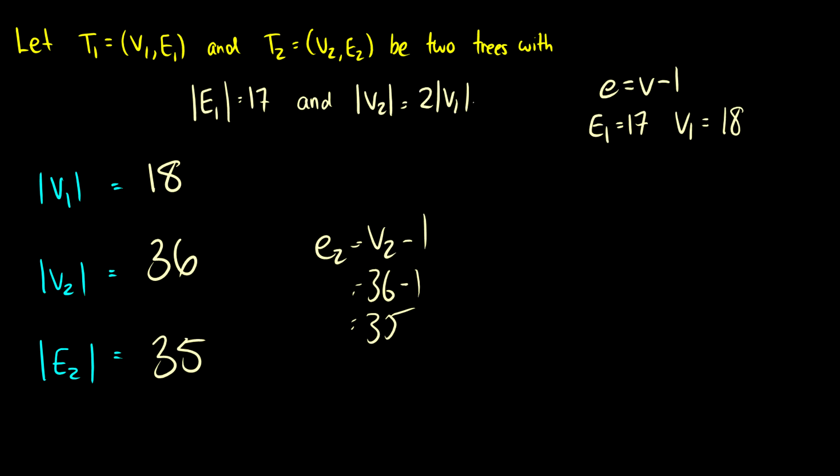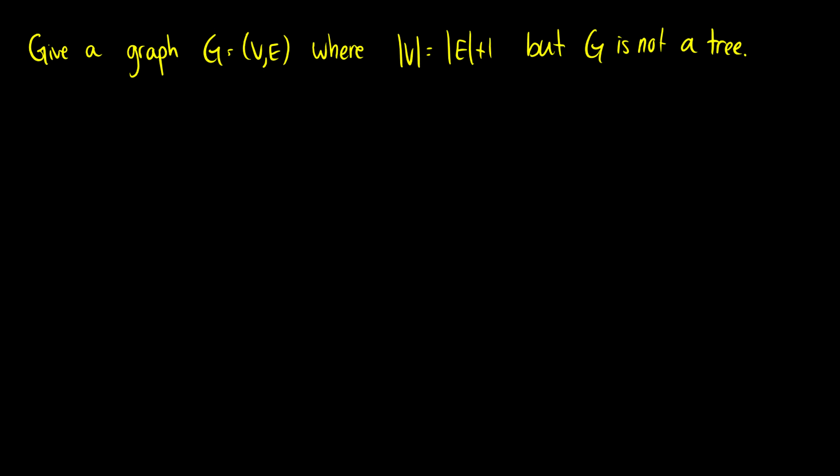So let's go to the very last thing here. Is it possible to have a graph with this property? That is the number of vertices is equal to the number of edges plus 1. It's the same thing as saying E is equal to V minus 1. I just rearranged it. But to have this graph where G is not a tree. So is this possible?